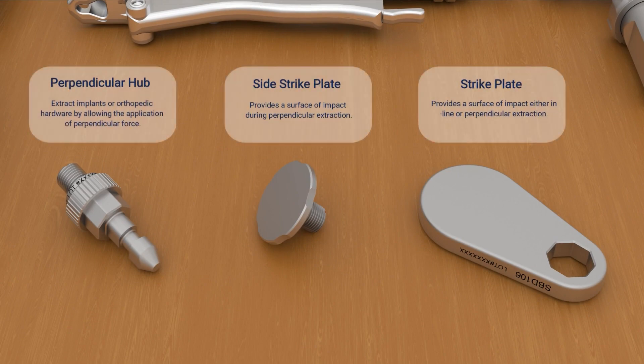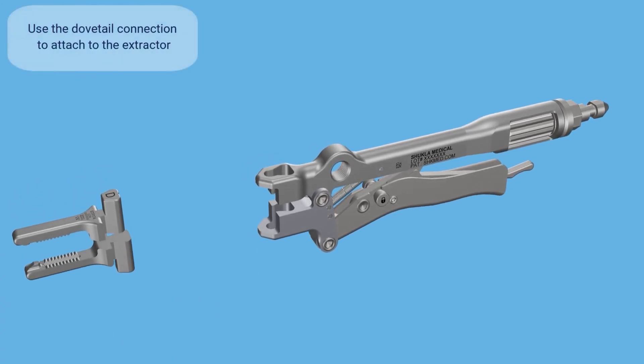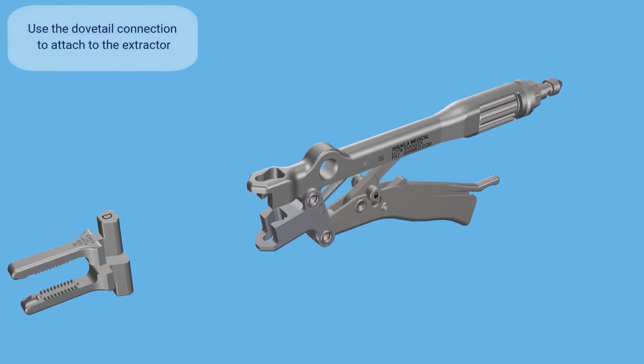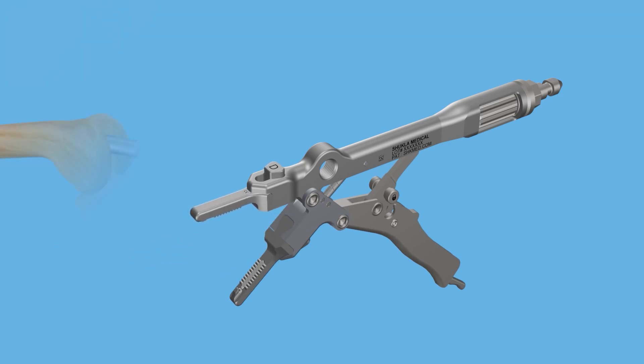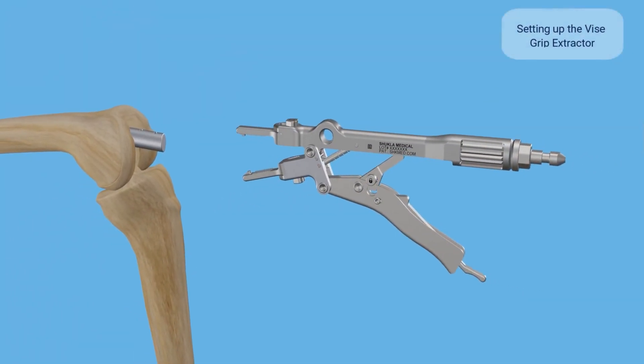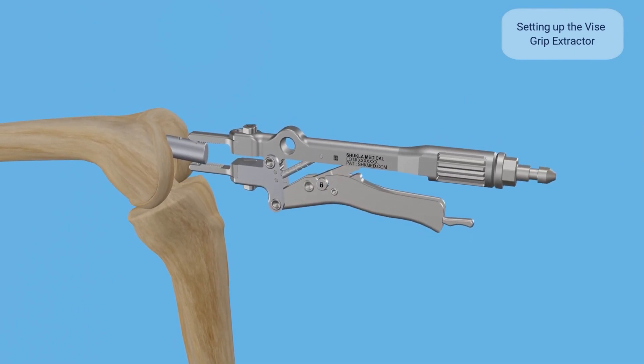The extensions as shown provide the surface for impact allowing quick removal of the implants. After determining the requirement of the jaws, attach them to the dovetail connection on the Vice Grip Extractor. Turn the knob clockwise to squeeze the handles until tight, and finally loosen the knob slightly for secure clamping.